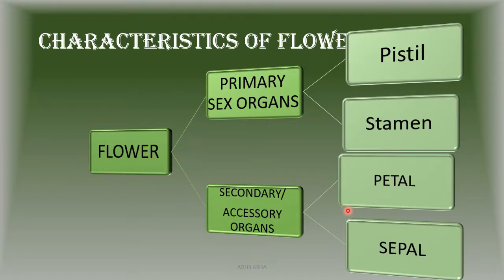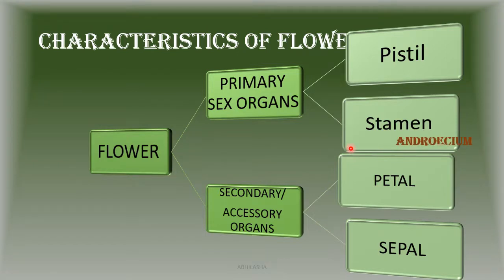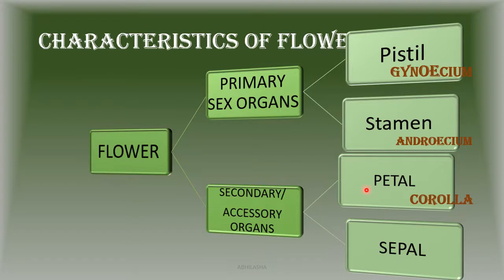Now, flowers are specially made for reproduction. So the reproductive parts in a flower are classified into two groups. The primary sex organs, or the parts which produce male and female gametes: they are the stamen, or collectively called the androecium, which produce male gametes, and the pistil or gynoecium, which produce female gametes. Then there are the secondary or accessory parts which help in the technical aspects of reproduction, that is protecting and ensuring gamete transfer. These are petals or collectively corolla, and sepals or calyx.